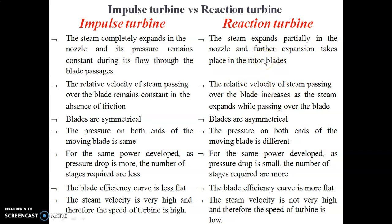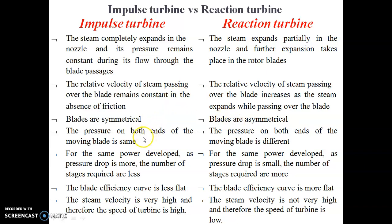Third point: in an impulse turbine the blades are symmetrical, whereas in a reaction turbine the blades are asymmetrical. In an impulse turbine, the pressure on both ends of the moving blade is equal because the pressure remains constant throughout.